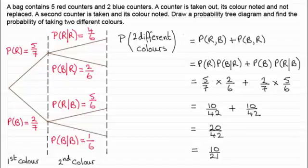So I hope that's given you some idea on dependent events and the notation I'd encourage you to use — this 'given' notation shown by a vertical line: the probability of one event given that a previous event occurred. Do have a look at the next example that you should find below this one if you're looking on my website. Remember, the website is totally free — it just relies on your support. Hopefully I'll see you there.